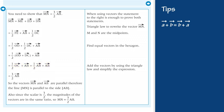Simplify the sum, equals 3 divided by 2 multiplied by the vector AB.